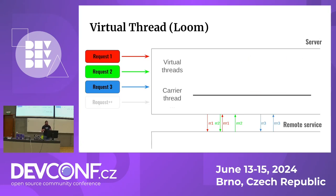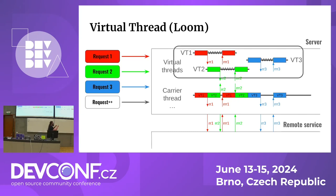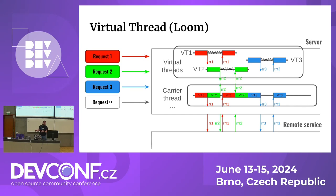I want to put these two execution models side by side, because the upper part looks very close to the traditional processing we used to have with normal threads, and the bottom part looks very close to reactive. This is the whole magic that Project Loom is doing — they just moved the complexity of reactive code into the JDK itself.